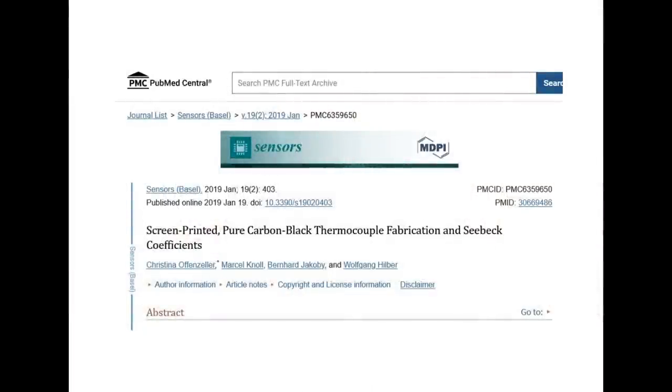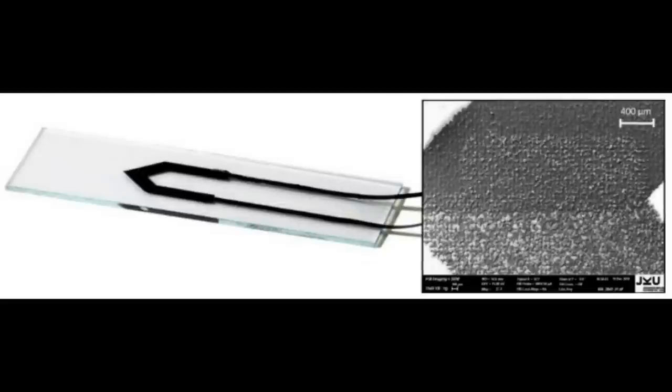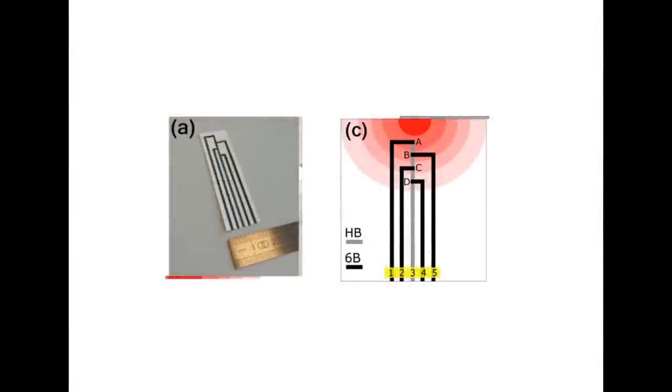Wouldn't you know it, this research paper has done exactly that. They used commercially available all-carbon inks and produced a thermocouple. Then they produced a whole load of thermocouples in junction - a thermopile. Once you've got a thermopile, you've got energy generation. I know the generation at each point is tiny, but we're talking about pencils and paper. This is being investigated a lot.